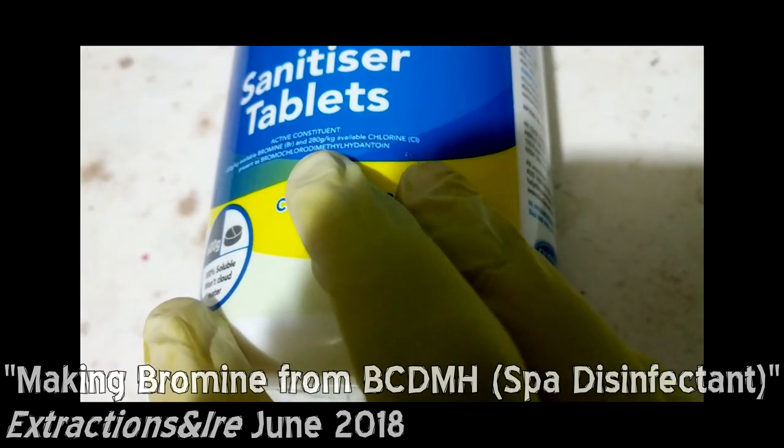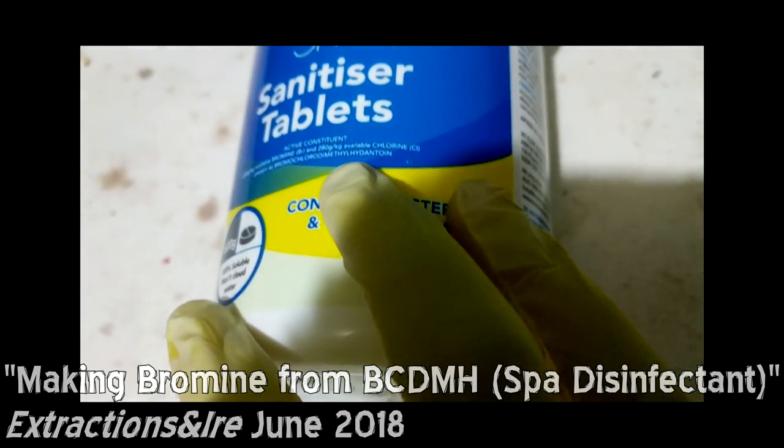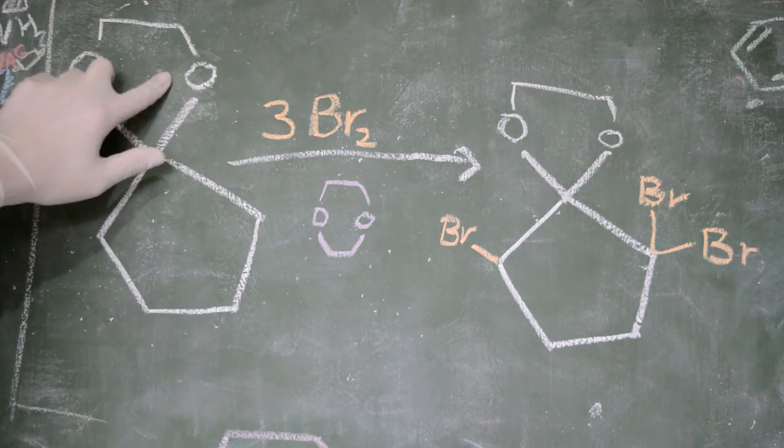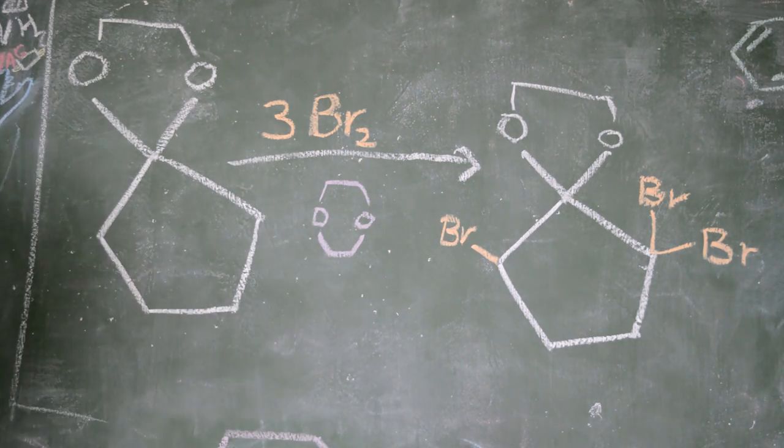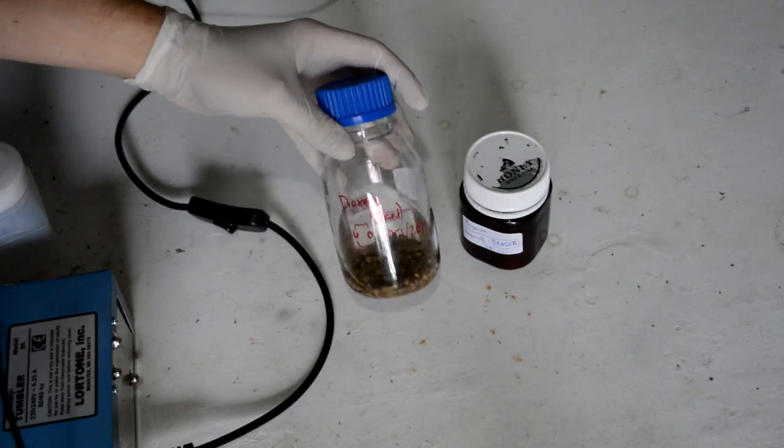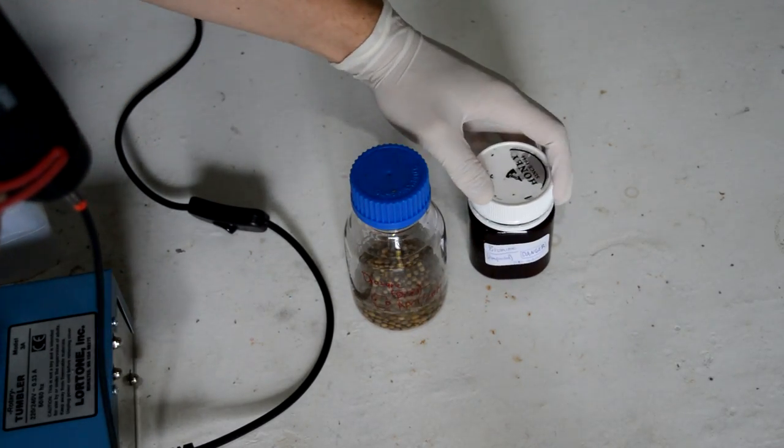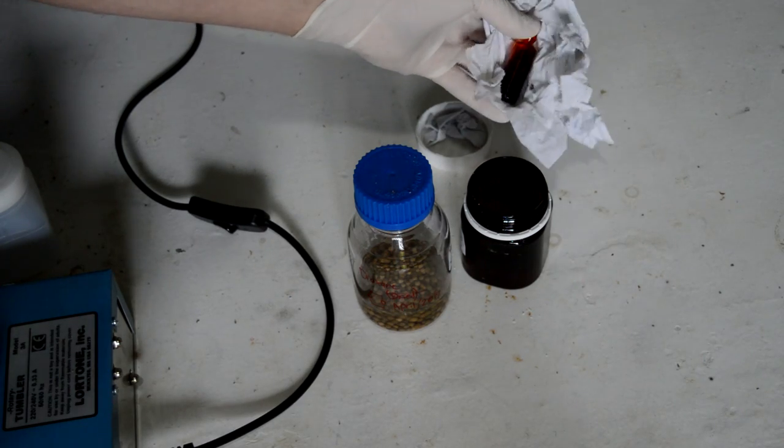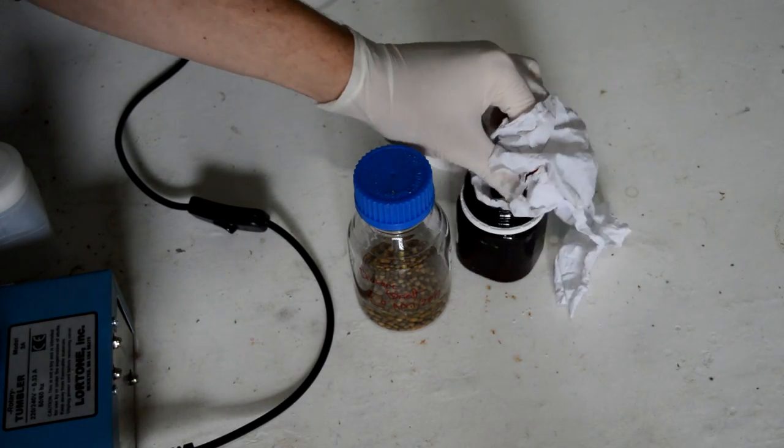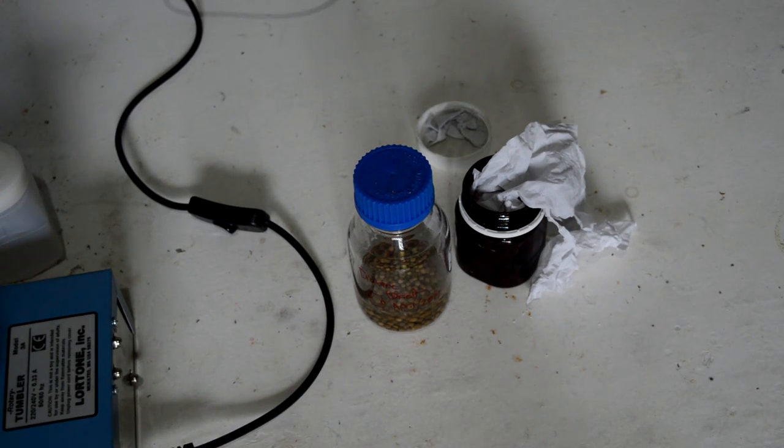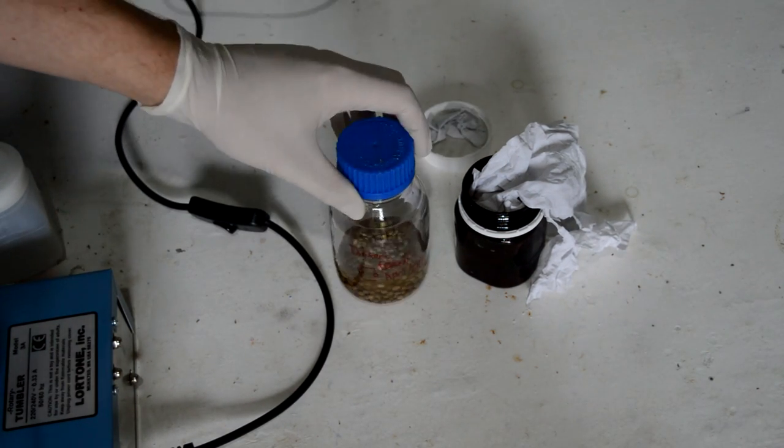1,4-dioxane we made from ethylene glycol, which is the same chemical we used to make these protecting groups. So this is where our dioxane is, and we have some amount of bromine in an ampoule here. The bromine is quite old now, but it does keep in these ampoules.